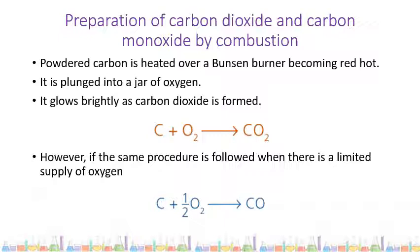First, the preparation of carbon dioxide by combustion: powdered carbon is heated on a spoon over a Bunsen burner until red hot, then plunged into a jar of oxygen. It glows brightly as carbon dioxide is formed — carbon burns in oxygen to produce CO2. To produce carbon monoxide, you follow the same procedure but with a limited supply of oxygen, which allows carbon monoxide to form.